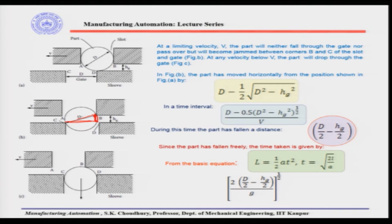So d minus d/2 equals d/2, which is the horizontal distance moved by the part. At the same time, when the part has moved horizontally from this position to this position, it has also moved vertically, and that vertical distance is d/2 minus hg/2. The horizontal movement is due to velocity V, so the time taken to move the part horizontally equals distance divided by velocity.